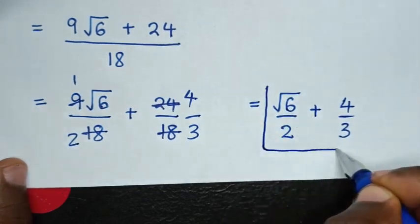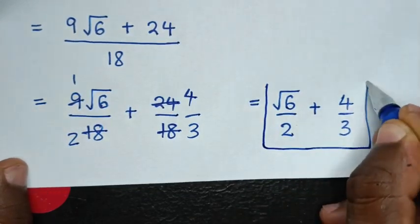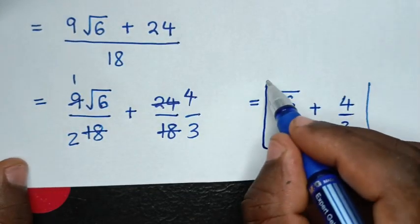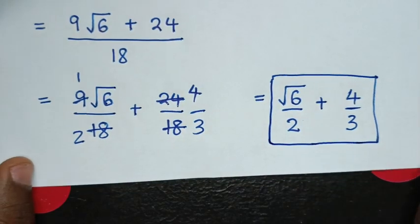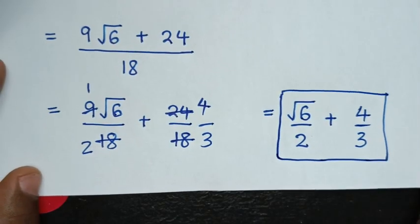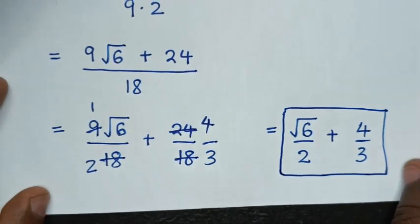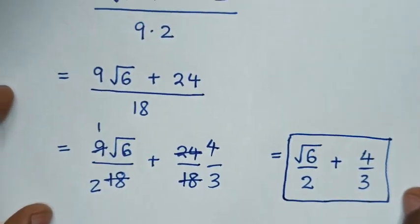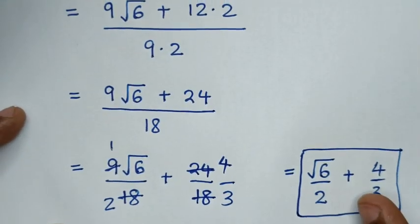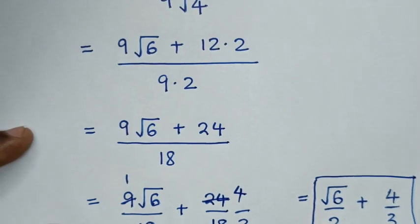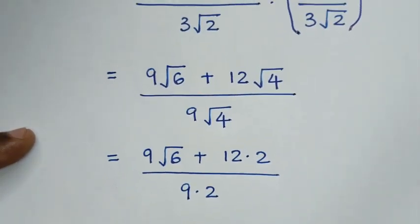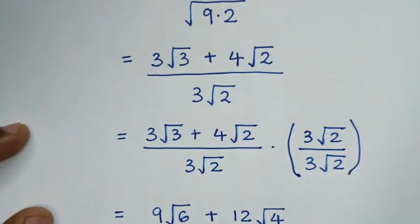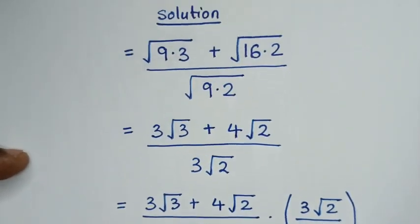So it will be equal to square root of 6 over 2, plus 4 over 3. This is our final answer. Thank you for watching, don't forget to subscribe to my channel, and see you in the next video. Bye bye.